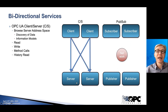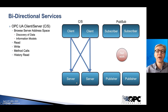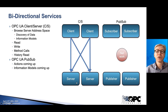An additional advantage of client-server technology is that we have extra services available in the server — together with data changes, I would say these make up the bidirectional services. We're talking about the ability to browse the server address space to find out what data is available, what tags there are, to discover information models the server supports. Clients can also read, write, call methods, and do history reads to the servers. These are basically missing from PubSub, but we now have actions coming up which are more or less method calls, and ways to work with information models in PubSub as well.